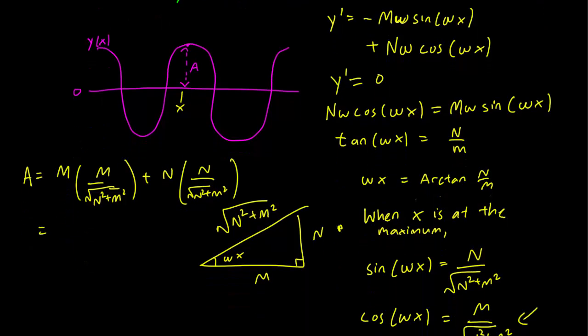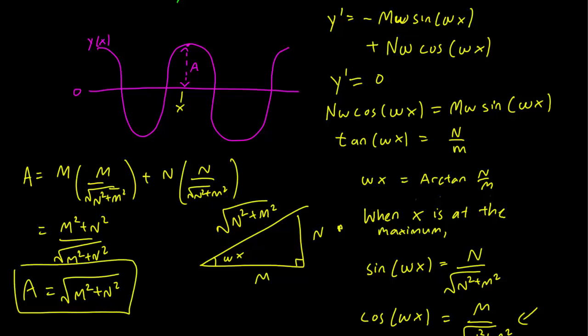And this just reduces to (M² + N²) over √(N² + M²), and this is precisely √(M² + N²). And that's where we obtain our amplitude formula.